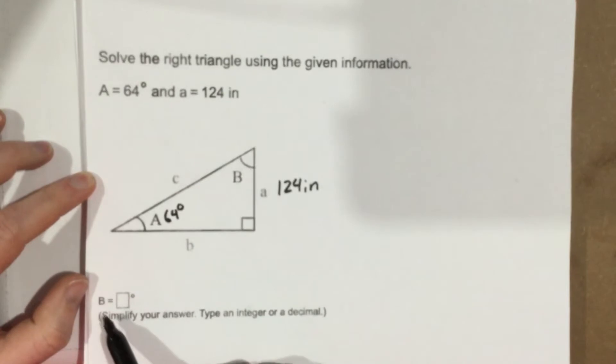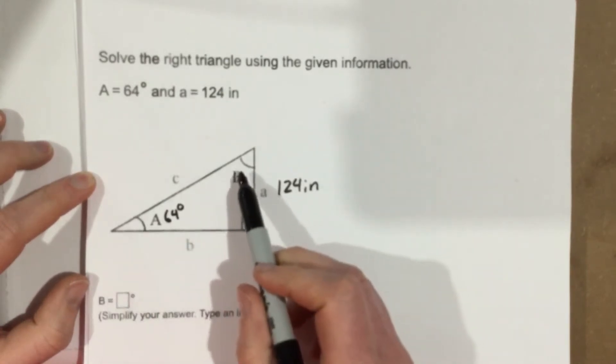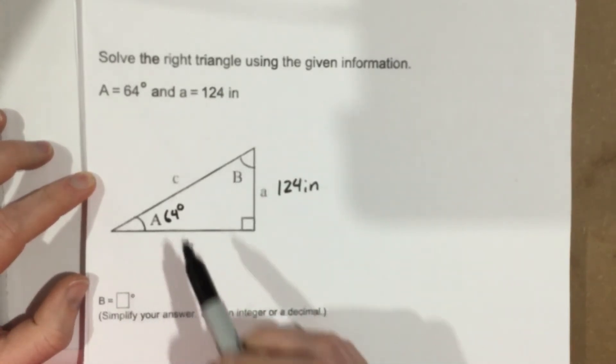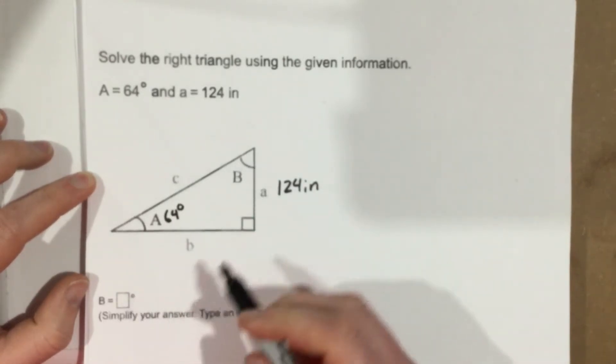And they want us to find, if you can see down here, they want us to find B, so what's this angle up here? I think they want us to find everything in the triangle. So let's start with B and then let's find everything else.